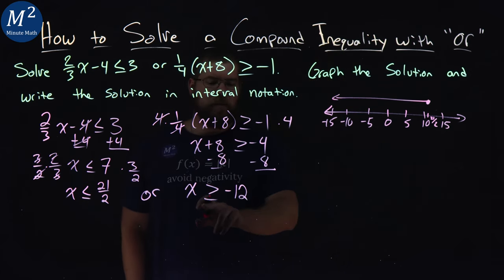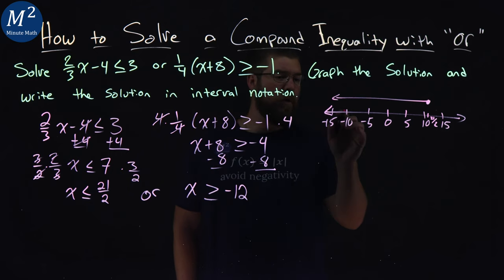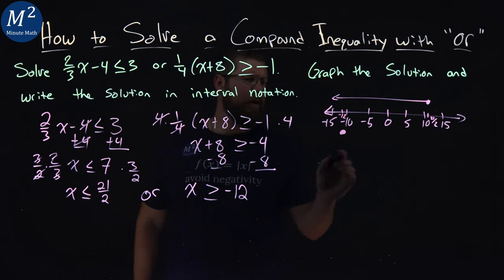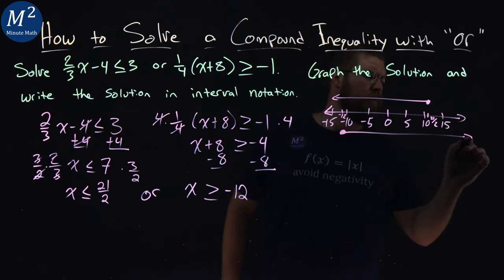What about our second one? x is greater than or equal to negative 12. So, negative 12 right here. x is equal to that. So, we put a closed circle. And x is greater than that, and it goes this way.